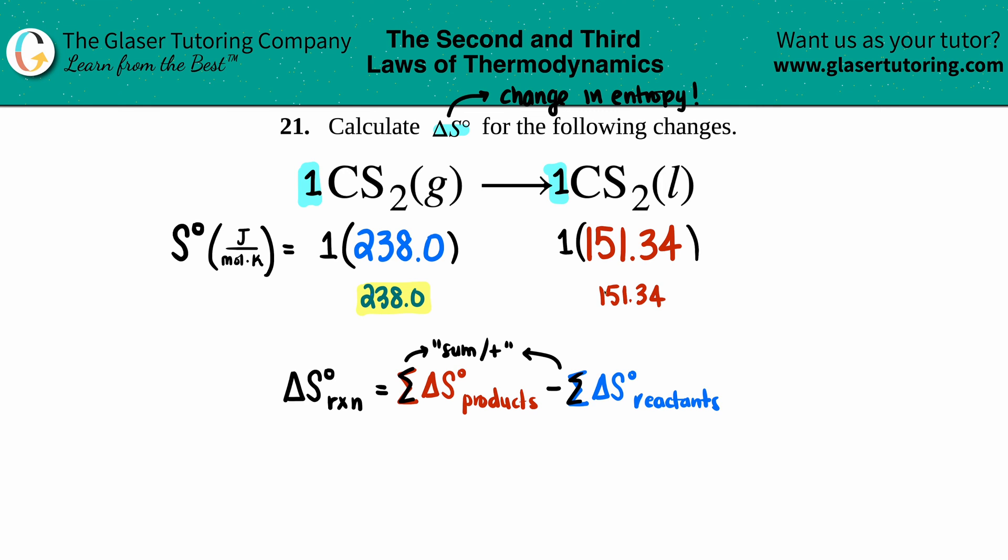Now all we're doing is we're taking these values and plugging them in into my formula, and it's always products minus reactants. So let's go for it. Delta S notch—just means standard—for the whole reaction, I got the products of 151.34...